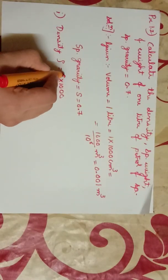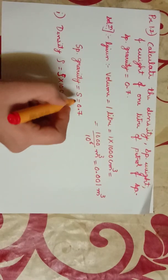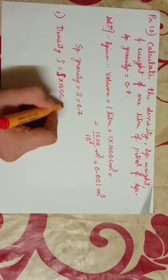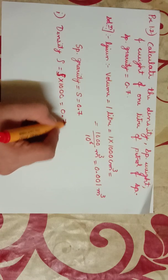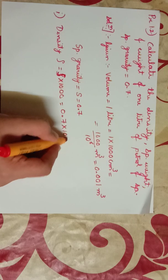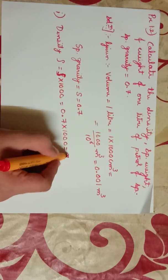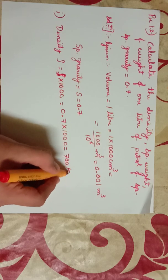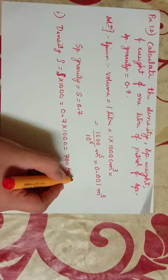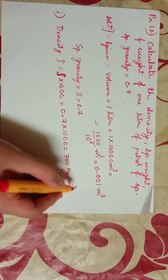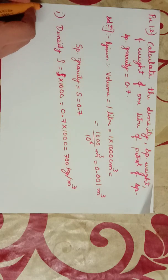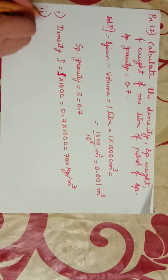That is specific gravity times 1000, that is 0.7 times 1000, which equals 700 kg per meter cube.